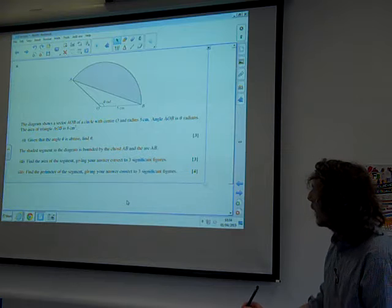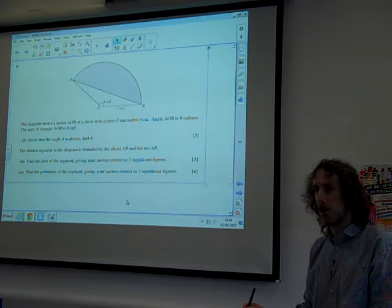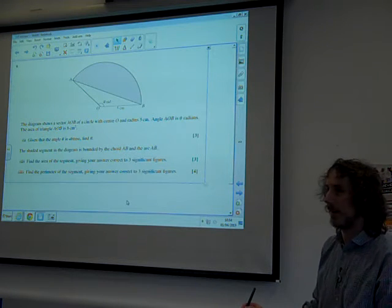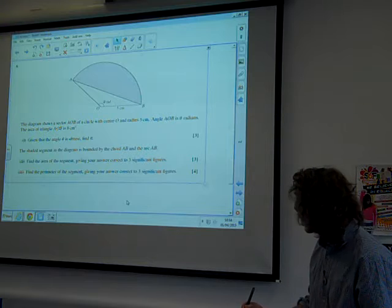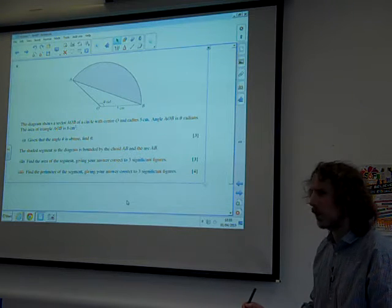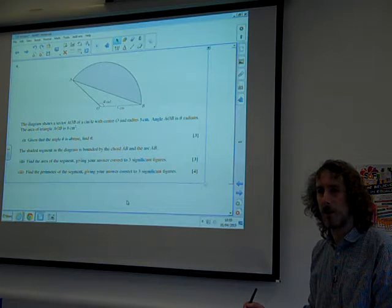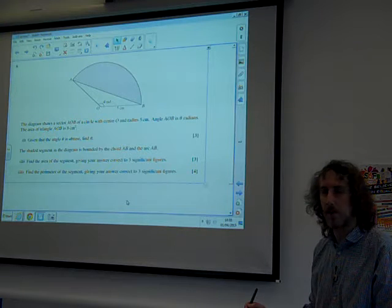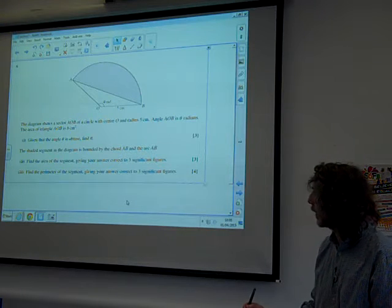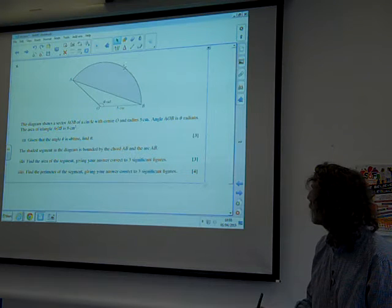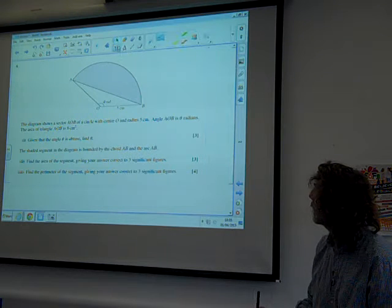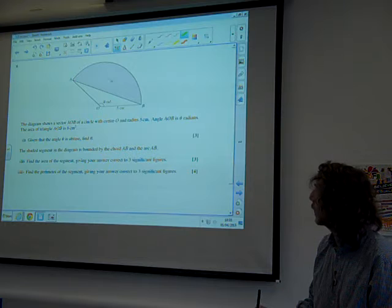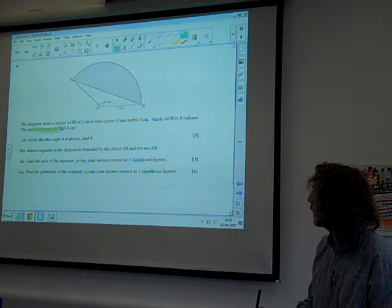Given that the angle theta is obtuse, find theta. What have we got to go on with this? Well, the only thing we really have is that the triangle has an area of 8. That's our bit of information we can latch on to. That's the only thing we've really got to work with.